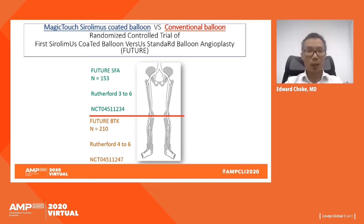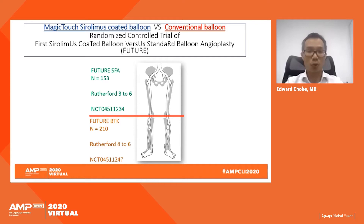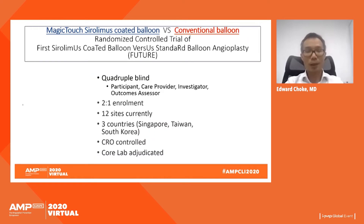There are two ongoing randomized trials: the FUTURE SFA, looking at femoral-popliteal lesions targeting 153 patients with Rutherford scores three to six, and the FUTURE BTK trial targeting 210 patients with Rutherford scores four to six. Both trials will be quadruple-blinded — participants, care providers, investigators, and outcome assessors all blinded — with two-to-one enrollment favoring sirolimus-coated balloon. Twelve sites across three countries are participating, and both are CRO-controlled and CoreLab-adjudicated.